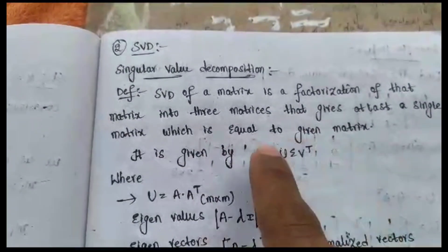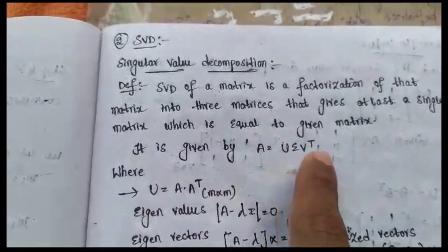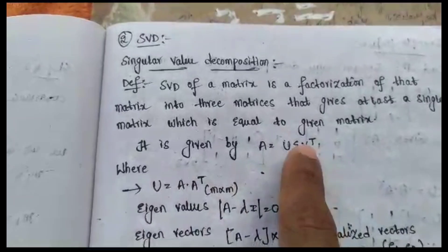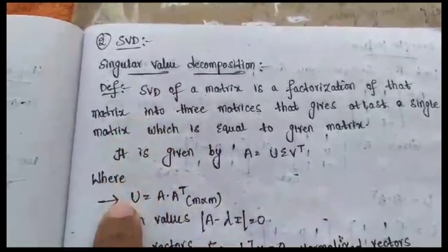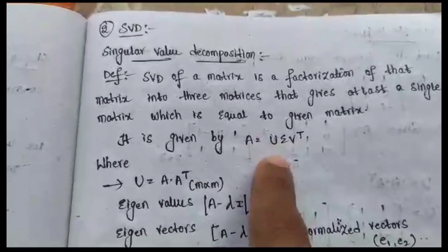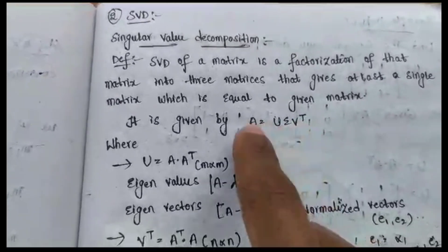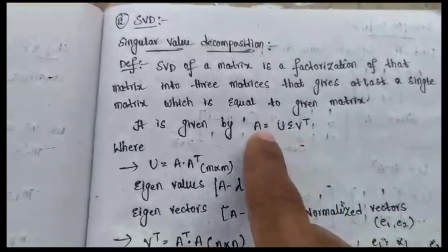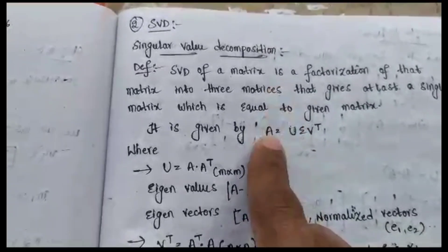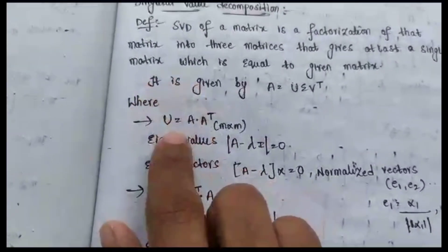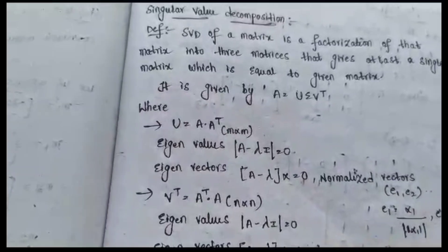The factorization gives at least a single matrix which is equal to the given matrix. It is indicated by A equals U times Σ times Vᵀ. This means that the U matrix, Σ matrix, and V matrix multiplied with each other gives back the original matrix A.